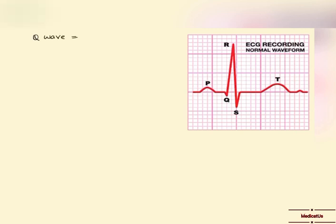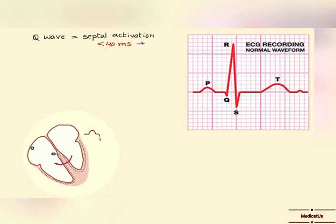Now about the Q wave — it represents septal activation and it should be less than 40 milliseconds, which is just one small square. If it goes beyond that in either height or width, it will lead to a deep Q wave.